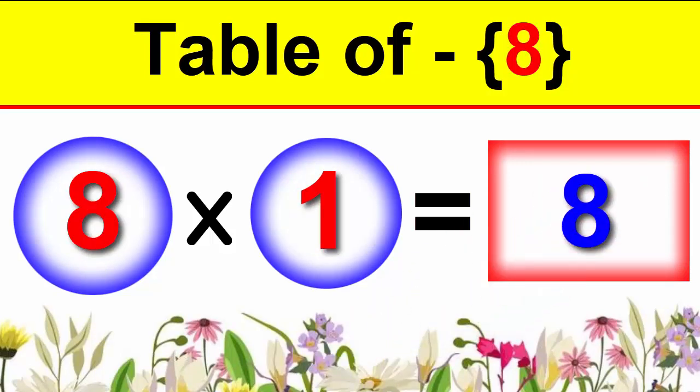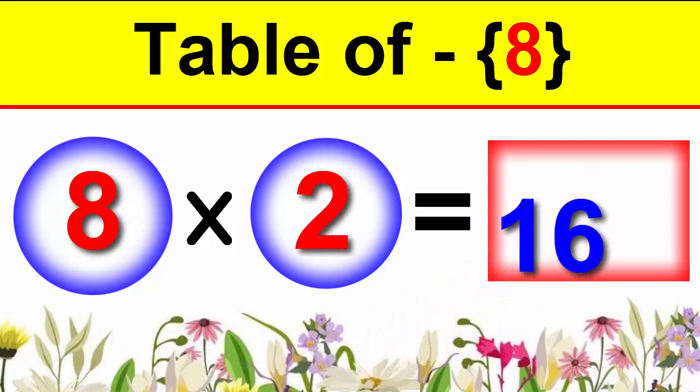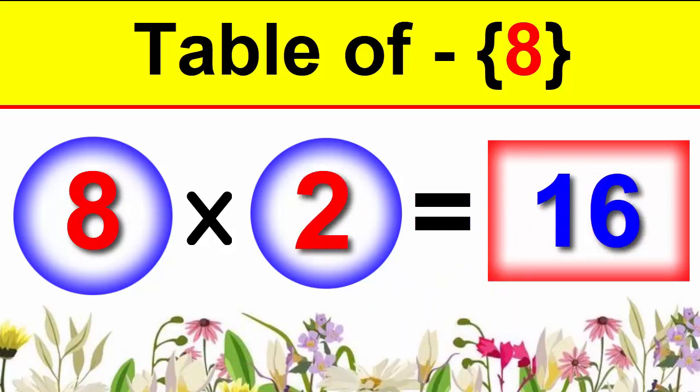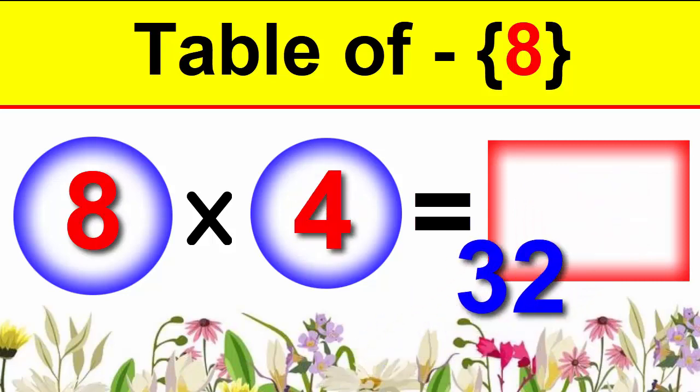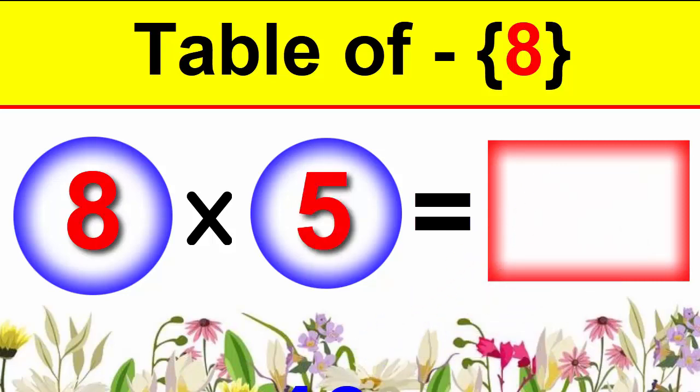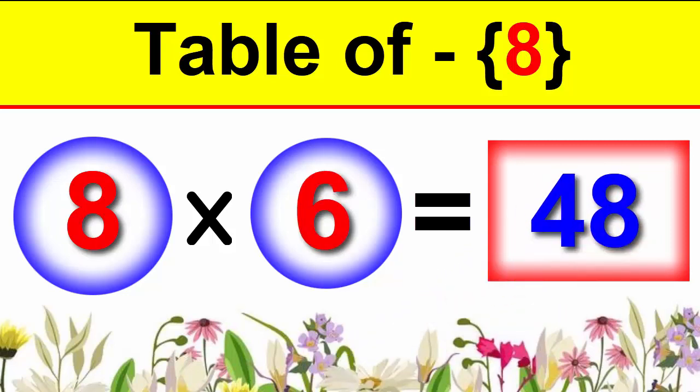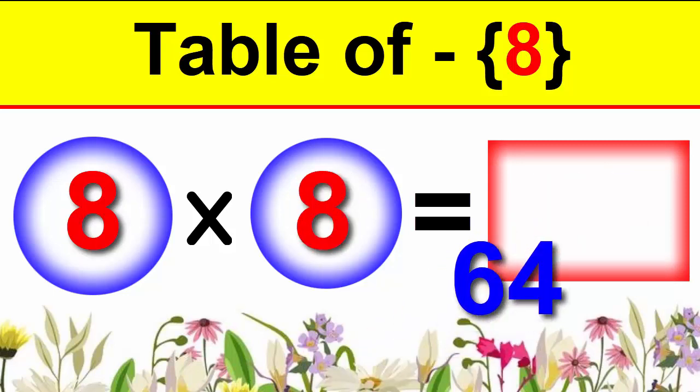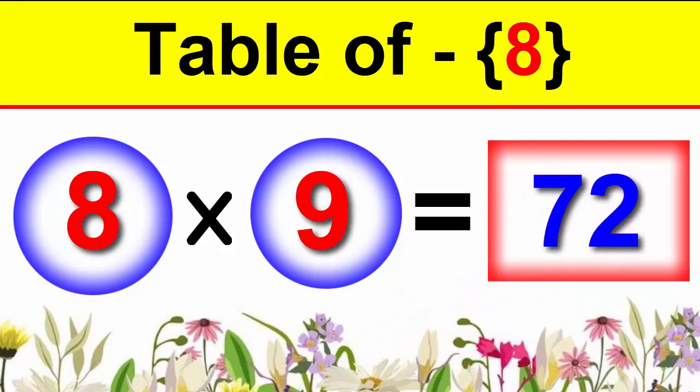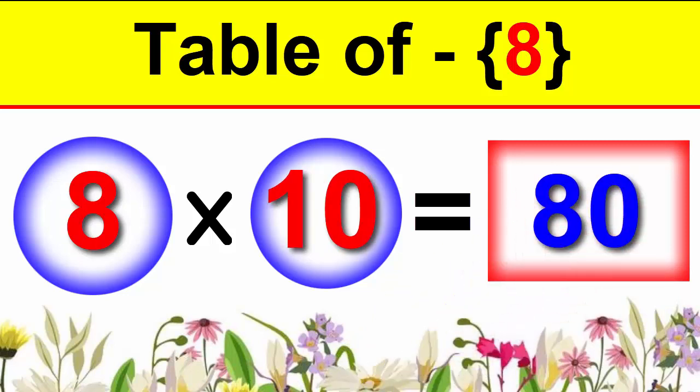8×1 is 8, 8×2 is 16, 8×3 is 24, 8×4 is 32, 8×5 is 40, 8×6 is 48, 8×7 is 56, 8×8 is 64, 8×9 is 72, 8×10 is 80.